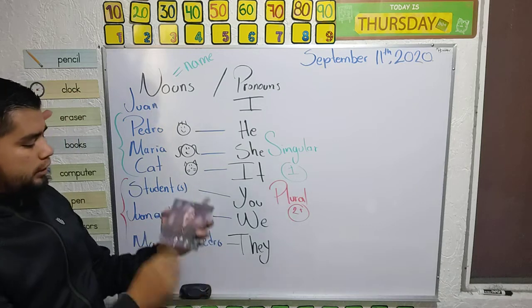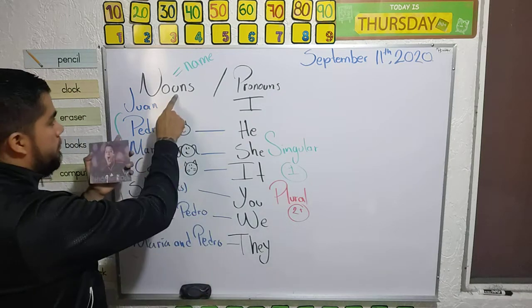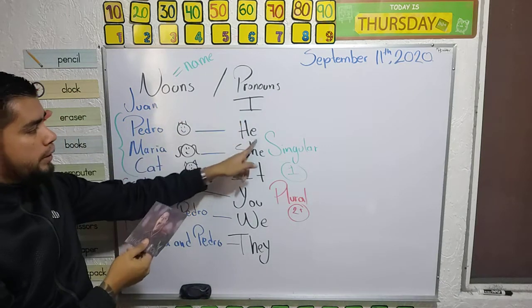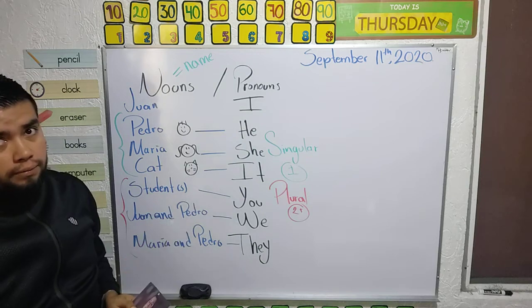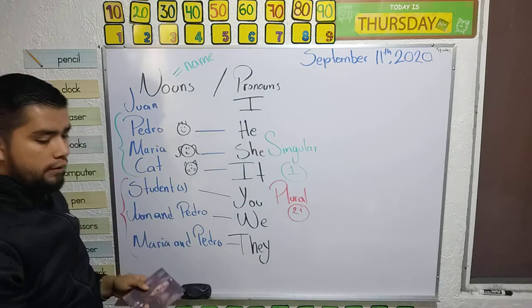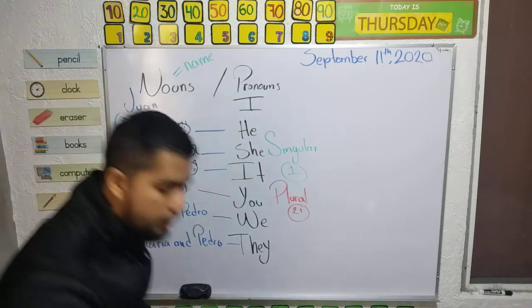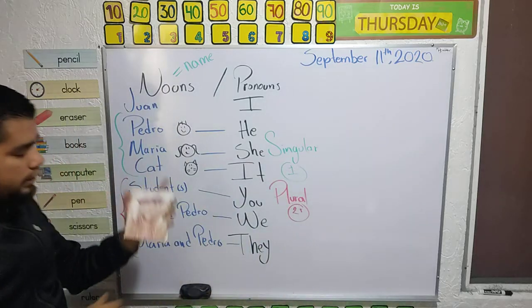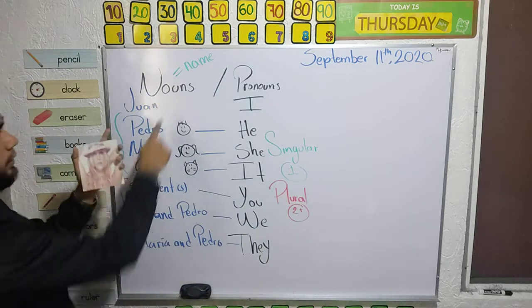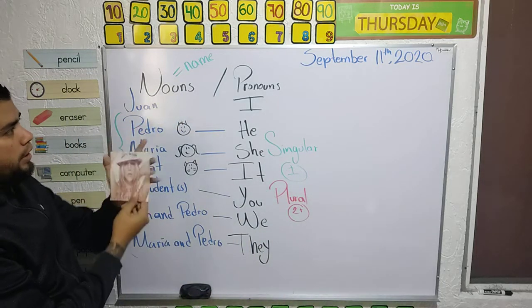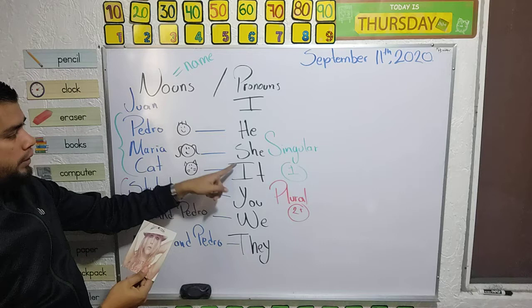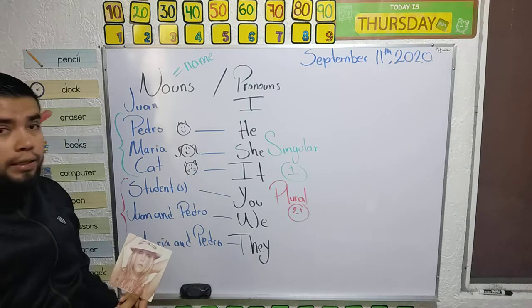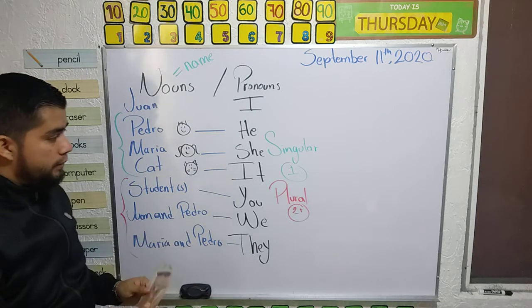So it depends. Noun: Chicharito — pronoun: 'they', because there are two. Noun: Britney Spears — pronoun: 'she', because she's a girl, it's feminine. So the pronoun depends on whether it is masculine, feminine, or neutral, and whether it is singular or plural.